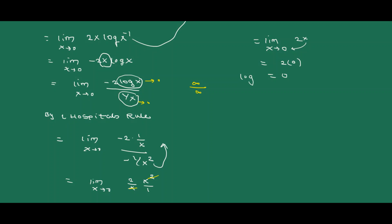On the left-hand side we have log u. Transposing log to the right-hand side, u = e^0 = 1, which is the required limit.